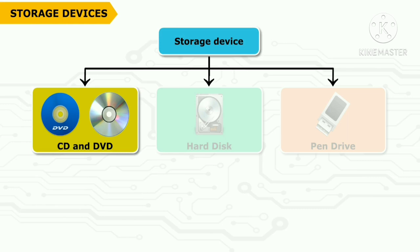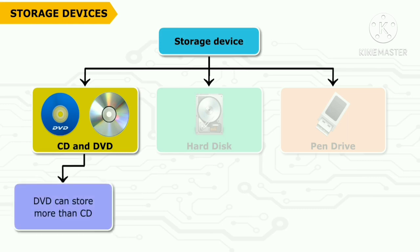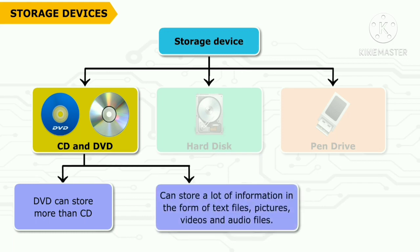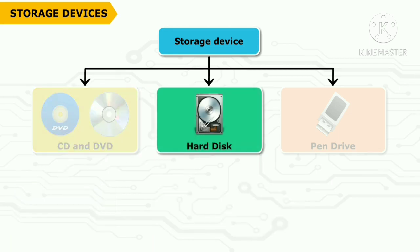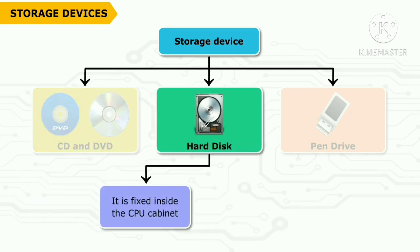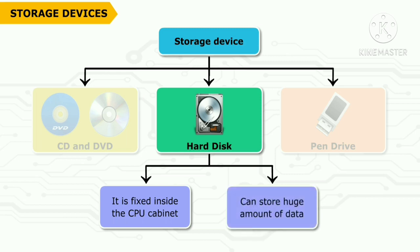Storage devices include CD (compact disc) and DVD (digital video disc), which can be used to copy or transfer files from one computer to another — they are portable. The hard disk is an inbuilt storage device of a computer; any data saved in a computer gets automatically stored in it.